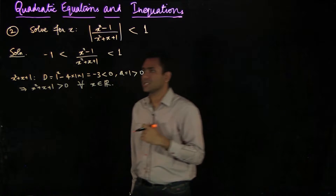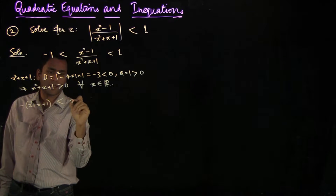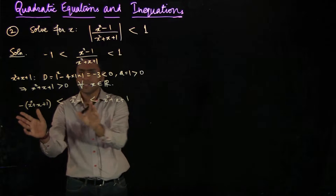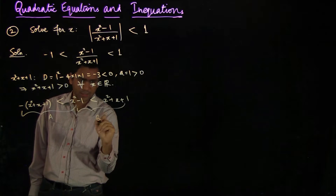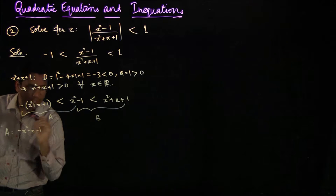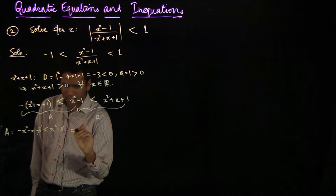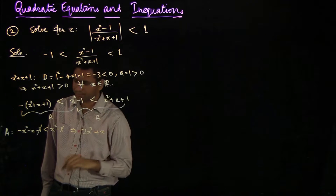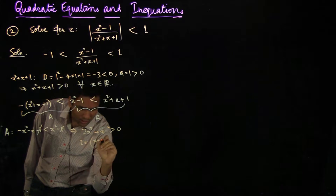Let's multiply both sides of the inequality. So we get: minus x squared plus x plus 1 is less than x squared minus 1, which is less than x squared plus x plus 1. Let us focus on these two inequalities separately, calling them inequality A and inequality B. Inequality A reads: minus x squared minus x minus 1 is less than x squared minus 1. The minus 1 cancels on both sides, and bringing x squared to the other side gives 2x squared plus x is greater than 0.